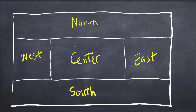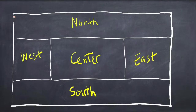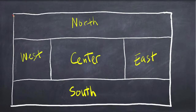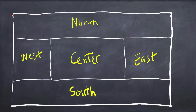The border layout will use the preferred size of the component in that region to determine the dimensions of that region. For the north region, it will not use the full preferred size — it will only use the component's preferred height. It will get the preferred size of that component, extract the preferred height, and only use that value to lay out the component's height.